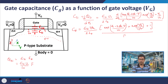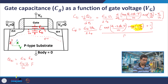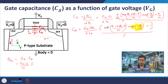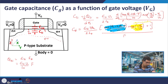As you increase the value of chi_s: suppose chi_s is negative, you would observe that a particular term dominates — that corresponds to accumulation. Suppose chi_s is positive and larger than 2*phi_f minus plus v, then another term dominates, and that is the strong inversion region.